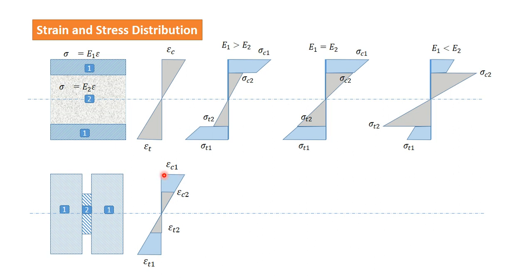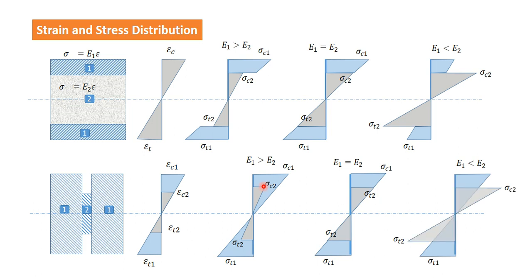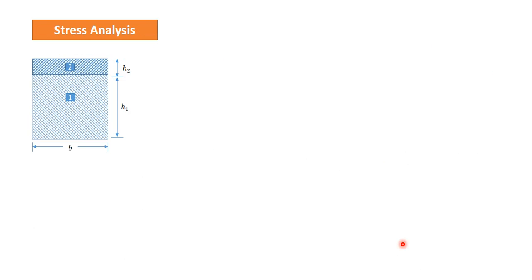The strain is induced only over the depth where each material exists. Similarly, we can plot the stress diagram: stress for material number one spans its depth, and stress for material number two spans its depth. If E1 is greater, the stress at the interface in material number one is greater than in material number two. We can similarly draw cases for E1 equal to E2 and E1 less than E2. This is how the stress distribution diagrams look for all configurations.